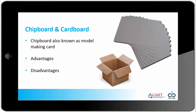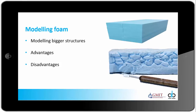Chipboard or cardboard. Chipboard is also known as model making card — for an A3 sheet you might pay about two euros. Then we have cardboard which is a waste material most of the time and is very handy for model making as well. Modelling foam is used for modelling bigger or more intricate structures, like a stone wall as shown here. It is quite expensive but very easy to work with — it's a dense type of foam so it shapes very well and takes a finish very well also.